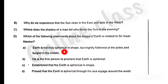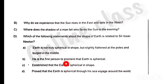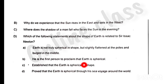Earth is not truly spherical in shape but slightly flattened at the poles and bulged in the middle. Here is the first person to proclaim that earth is spherical. Established that the earth is spherical in shape. Proved that the earth is spherical through his sea voyage around the world. There are four options.